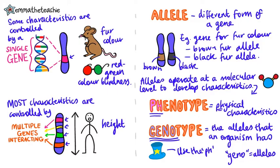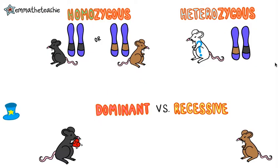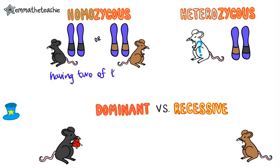Let's take a look at how alleles work, using the example of fur color in mice. Looking at these alleles and the word homozygous, can you work out what homozygous actually means? Pause, have a think, and press play when you're ready. Homozygous means having two of the same alleles.